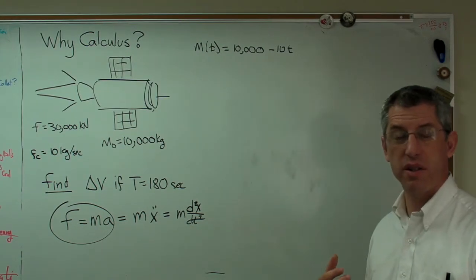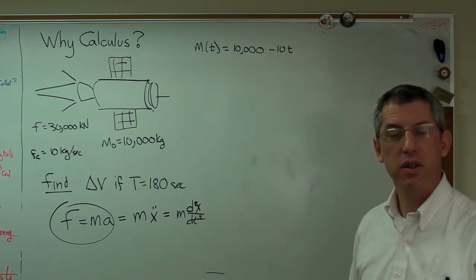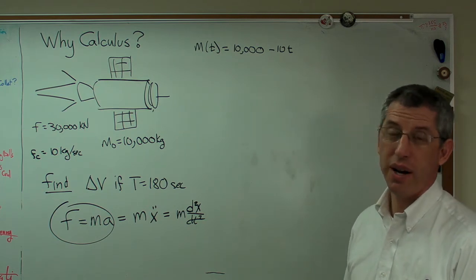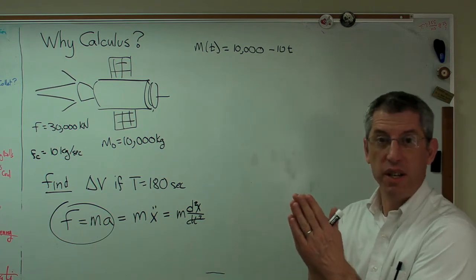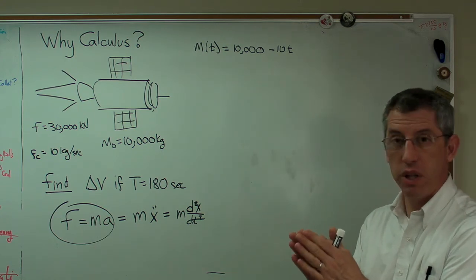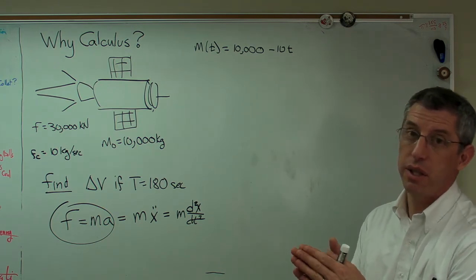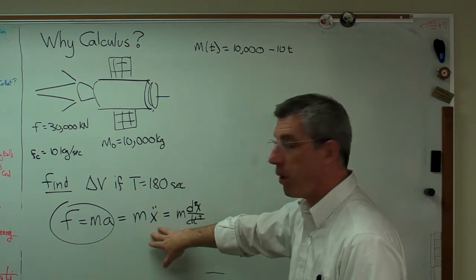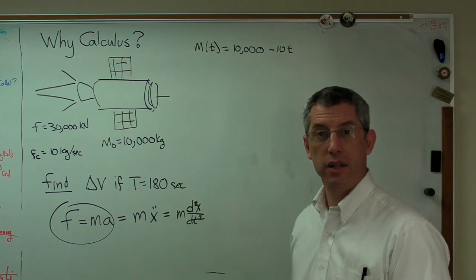I could do that. The more pieces I broke it into, the more accurate it would get. Well if I make the pieces infinitesimally small - that means really really close to zero time span but not exactly zero - that's calculus. So if I'm willing to use this expression and write this out with the derivative in it, I'll get the exact right answer.